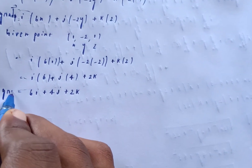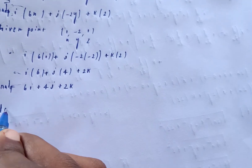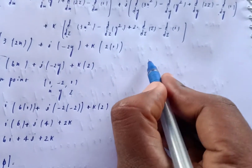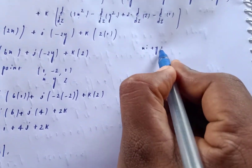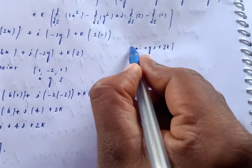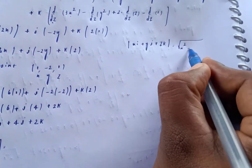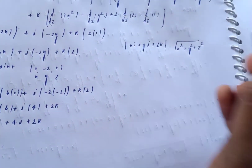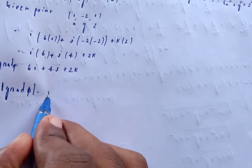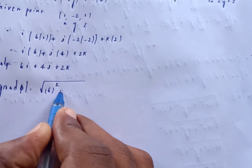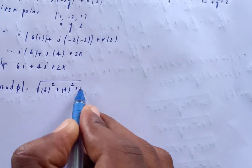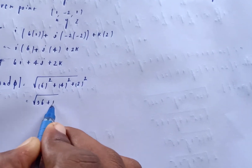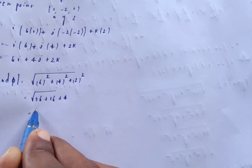Now compute |grad φ| = √(6² + 4² + 2²) = √(36 + 16 + 4) = √56.